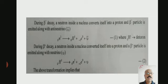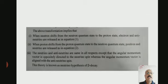The above transformation implies that when the neutron shifts from the neutron quantum state to the proton state, an electron and anti-neutrino are released as in equation 1. When a proton shifts from the proton quantum state to the neutron quantum state, a positron and neutrino are released as in equation 2.